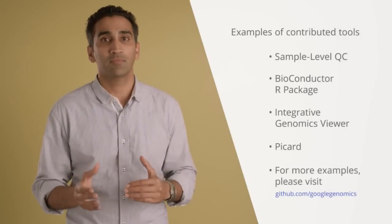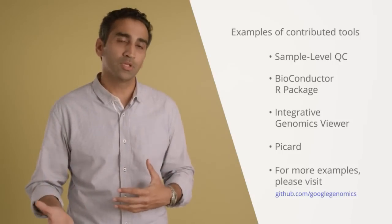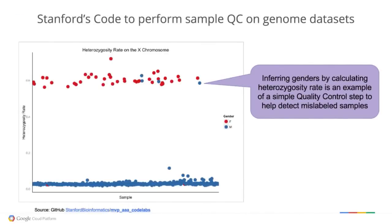Google and the research community are building a growing repository of open source code and tools available on GitHub for researchers. They can use it for their own pipelines or modify it for their analysis. One example is a principal coordinate analysis code available on GitHub — when run as PCA analysis on the entire 1000 Genomes dataset and color-coded by population type, it produces a nice clustering by ethnicity as expected. Another example, created by Stanford University researchers, is used to perform quality control on genomic data sets — specifically plotting heterozygosity rate on the X chromosome to help easily identify mislabeled samples, shown as blue dots towards the top of the graph.